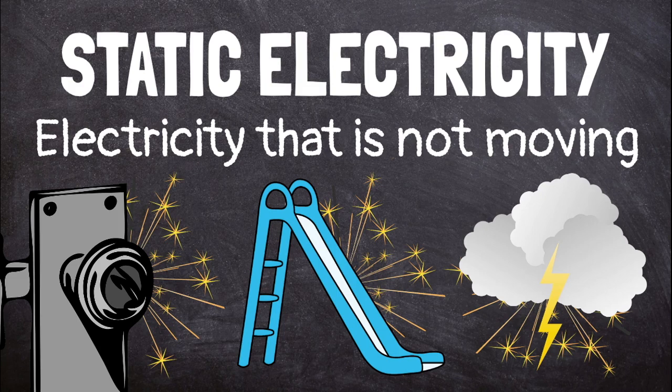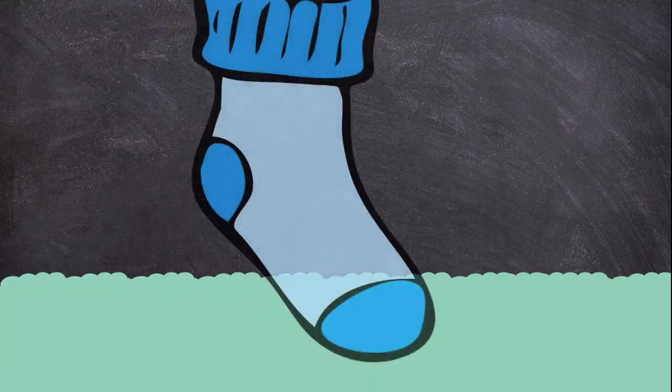Static electricity happens when electrons build up on an object. If you rub your socks across a carpet, electrons from the carpet move to your socks.